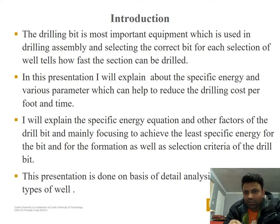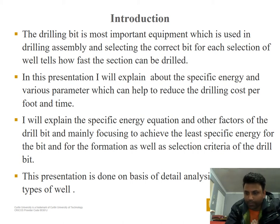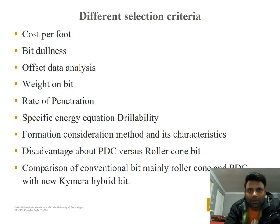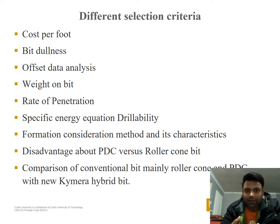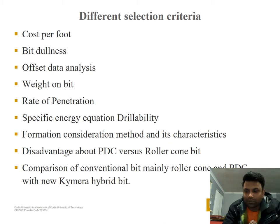This presentation is done on the basis of detailed analysis of different types of field data. The different selection criteria include cost per foot, bit dullness, offset data analysis, weight on bit, rate of penetration, specific energy equation, reliability, formation consideration method, and the characteristics and disadvantages of PDC versus roller cone bit — including a comparison of conventional bits with the new Kymera hybrid bit.